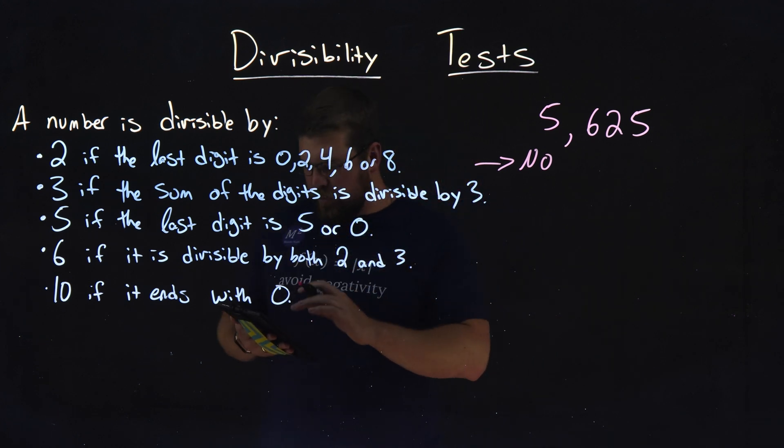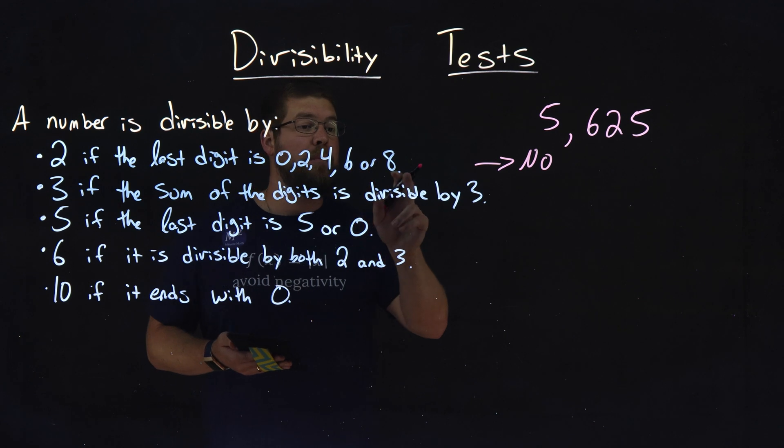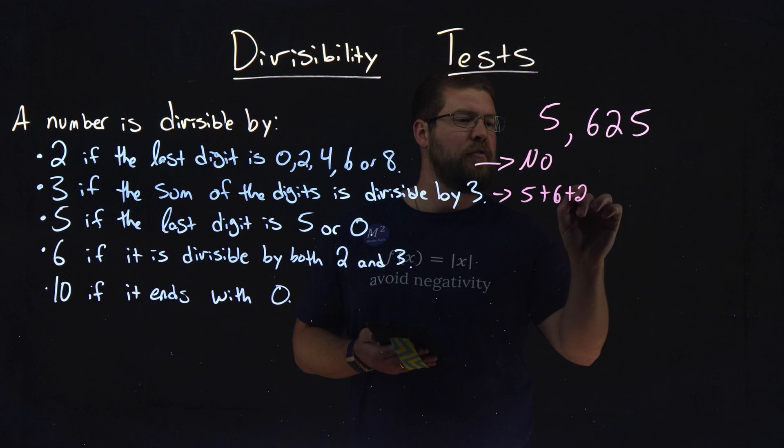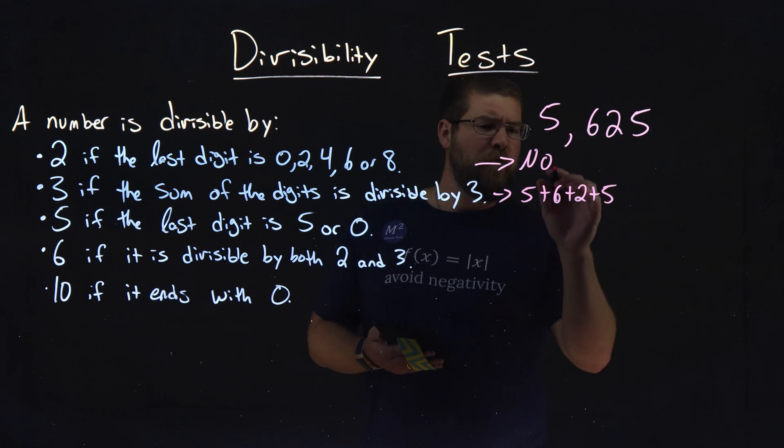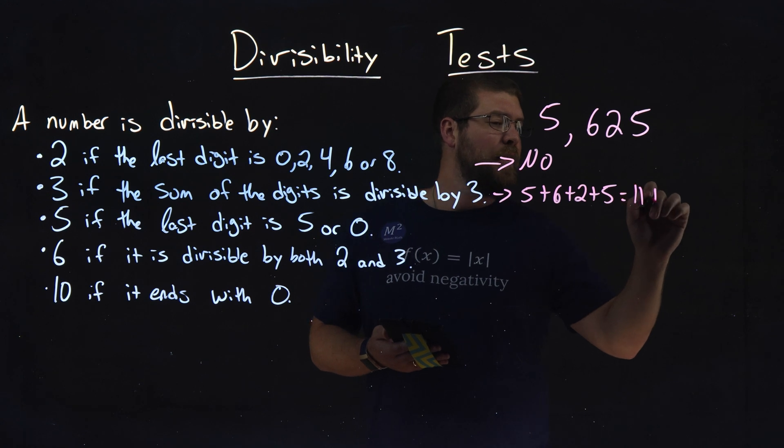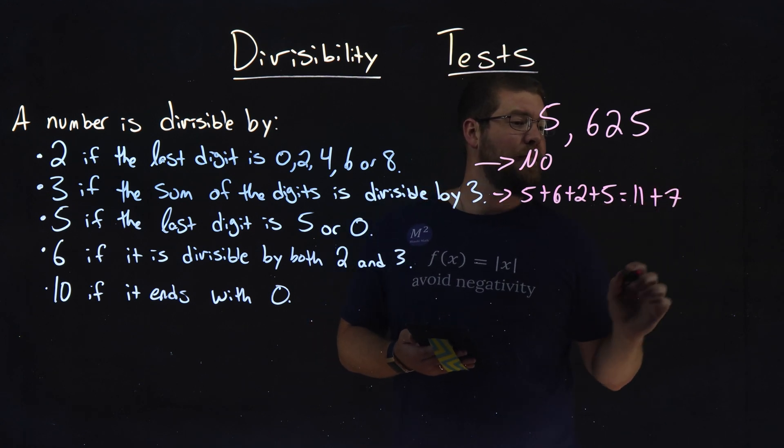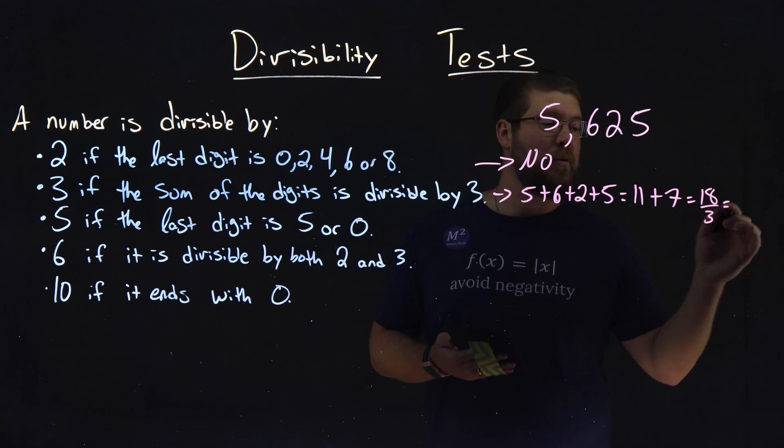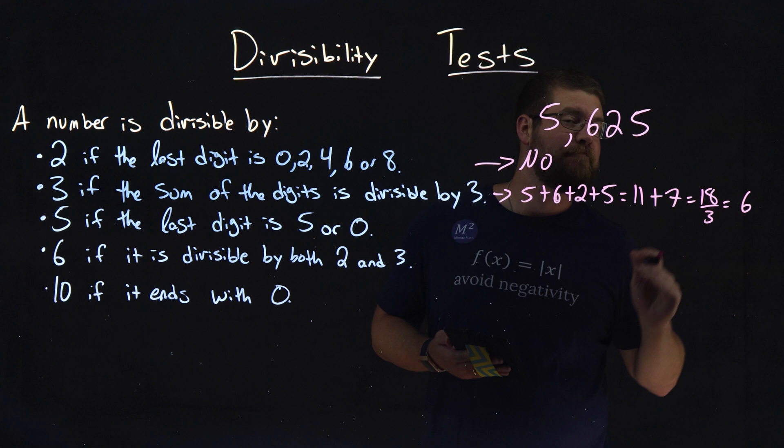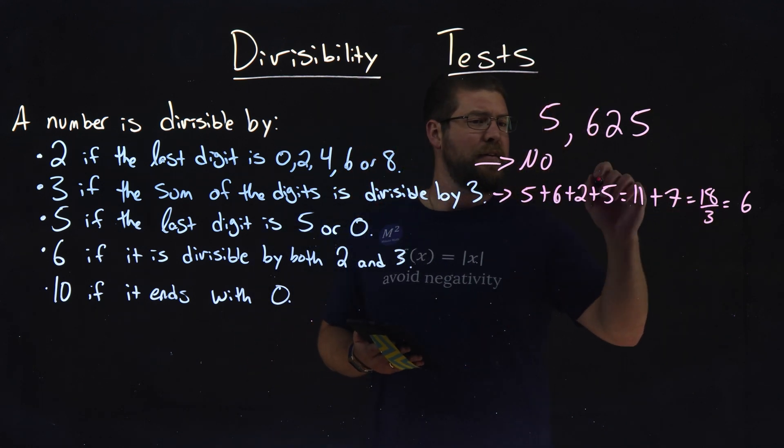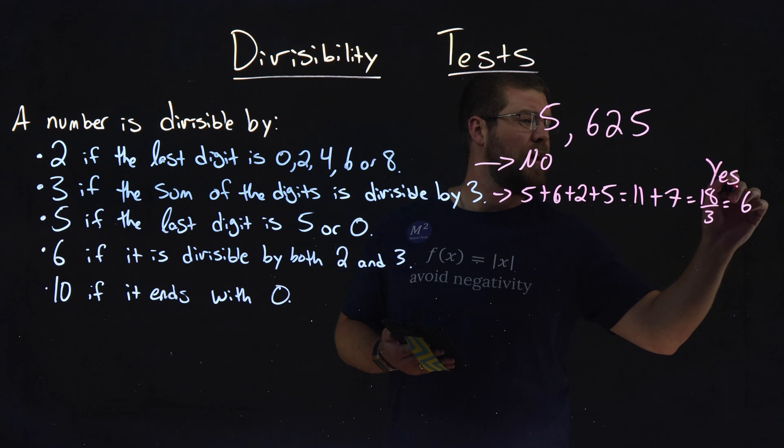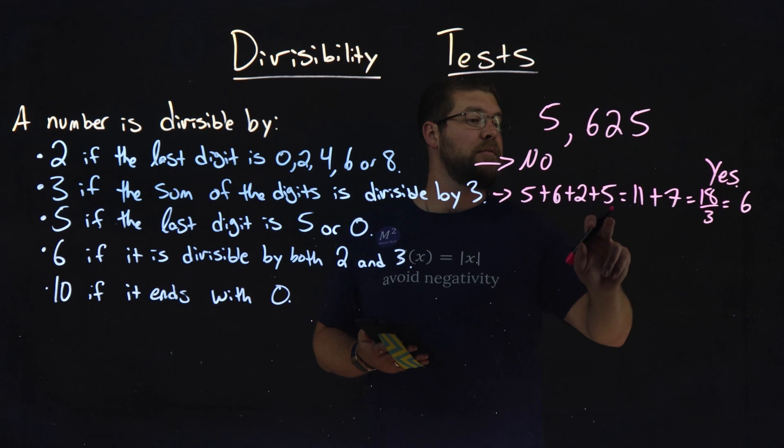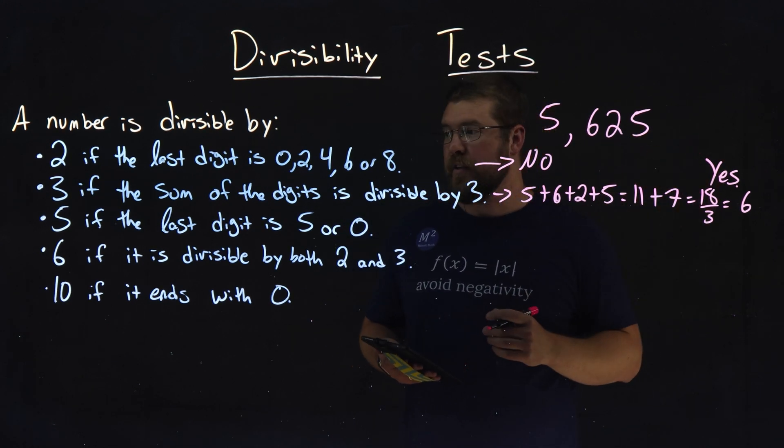What about 3? Is the sum of the digits divisible by 3? So let's add that up. What's 5 plus 6 plus 2 plus 5? Well, 5 and 6 add up to 11. Plus 2 plus 5 is 7. We add them together. 11 plus 7 is 18. 18 divided by 3 is 6. So yes. The number is divisible by 3 because we added each one of these digits, came to 18, divided that by 3, and got 6.